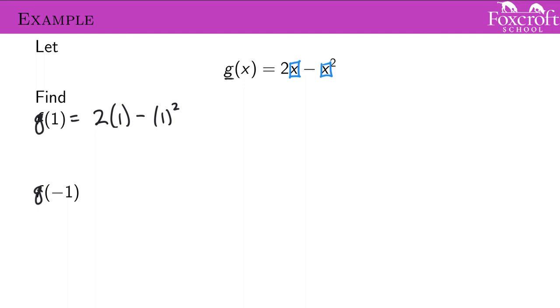Basically every single time you would have written an x in the original expression, you're going to write a 1 instead. And order of operations says my exponent's going to happen first, and 1 squared is 1. Then multiplication.